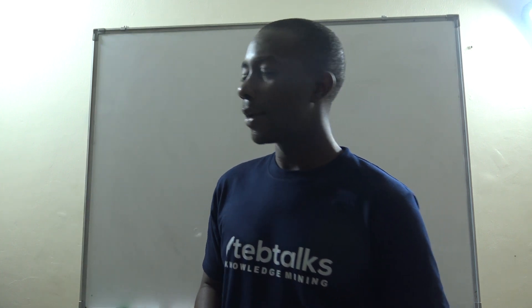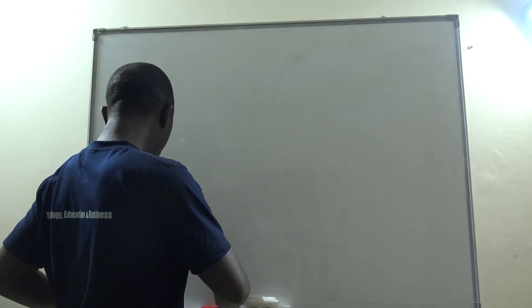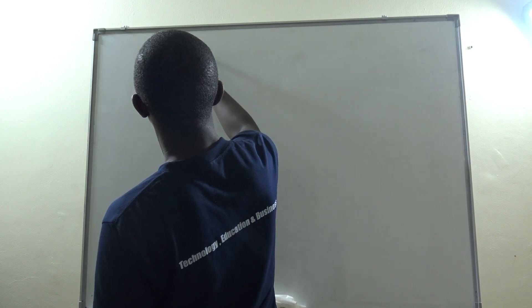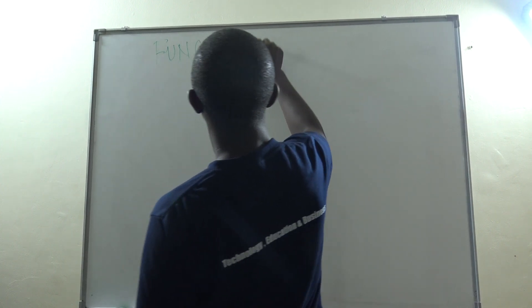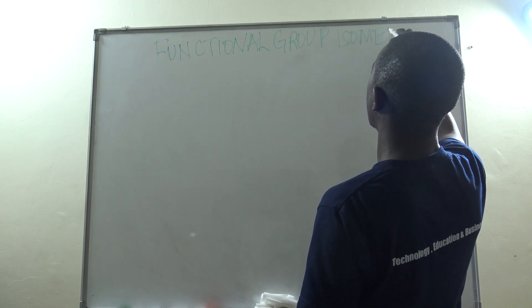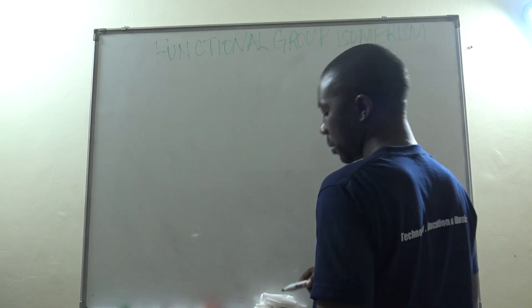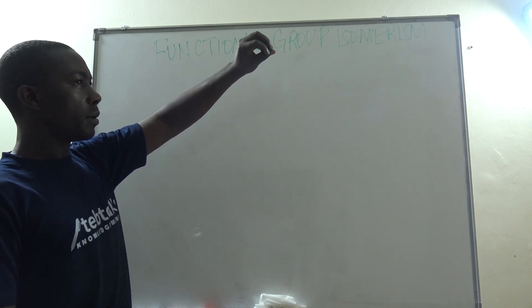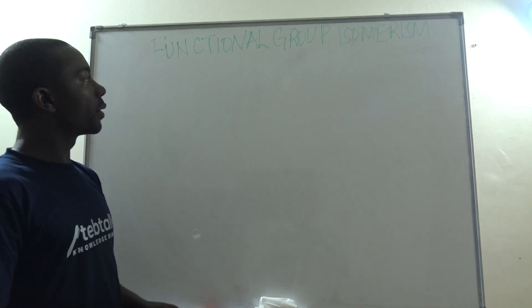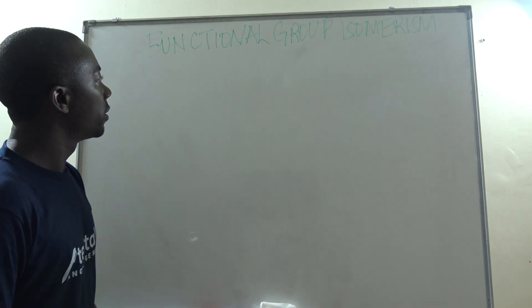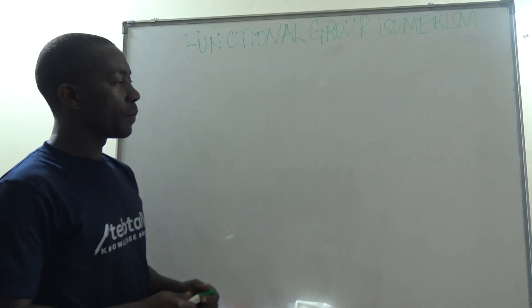We are continuing with organic chemistry, looking at functional group isomerism. In functional group isomerism, it is all about the change of a functional group. The functional group determines and is the center of all chemical properties of a homologous series. Once the functional group changes, then the chemical properties should definitely also change. That is functional group isomerism.